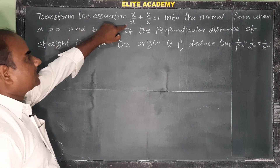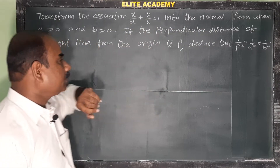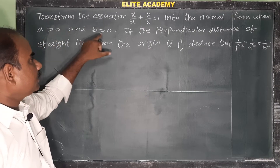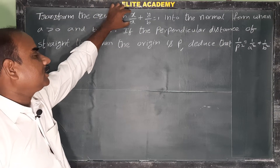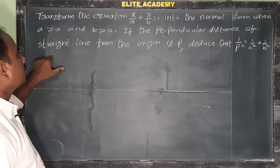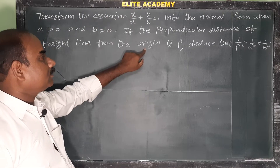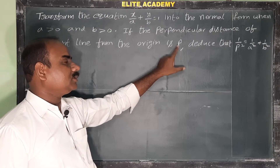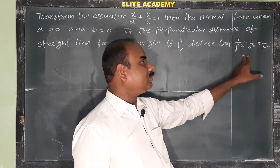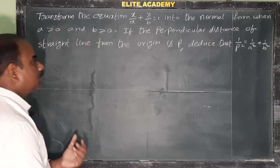Transform the equation x/a + y/b = 1 into normal form when a > 0 and b > 0. Since a > 0 and b > 0, the straight line lies in the first quadrant. If p is the perpendicular distance from the origin to the straight line, the key relation to prove is: 1/p² = 1/a² + 1/b².